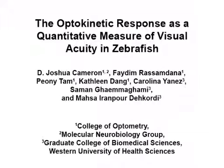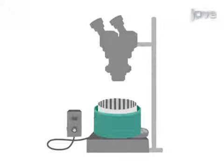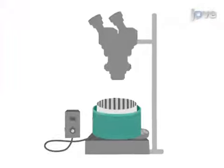The overall goal of this procedure is to measure the visual acuity in adult zebrafish using the optokinetic response, or OKR. This is accomplished by first building the OKR device, which consists of a rotating drum and data capturing apparatus.